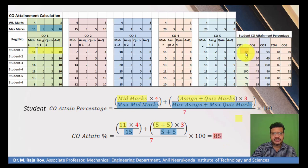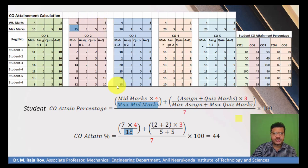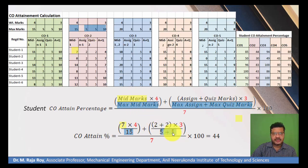Repeating the procedure for CO2: maximum marks in mid-exams are 15, with weight 4. The student secured 7 marks in the mid. For assignment and quiz, marks allocated are 5 and 5, but the student secured only 2 in assignment and 2 in quiz. Multiplied by weight 3, whole divided by 7 into 100, gives 44. That value is entered for CO2.